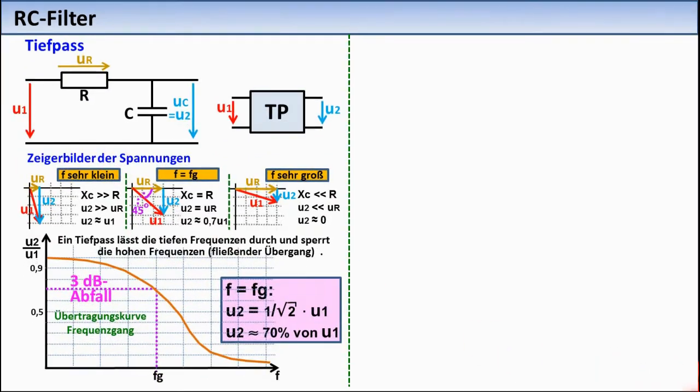The frequency dependence of the resistance of capacitors and coils is used in the construction of filters, which have the task of blocking or passing certain frequency ranges. The parallel-connected capacitor in the left circuit short-circuits high frequencies, so that only low frequencies reach the output.